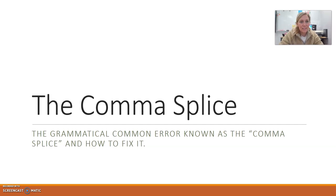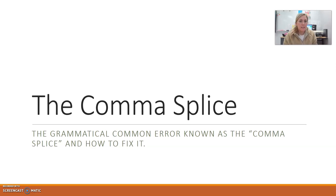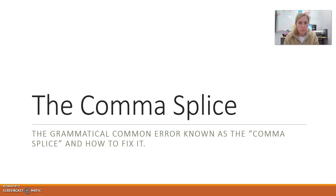Hi everyone. The first grammatical concept we're going to go over this semester is the comma splice. A comma splice is actually an error — a grammatical error. So if you have a comma splice in your writing, you're doing something wrong. It's a really common error, so we're going to talk today about how to fix that error and what that error is.